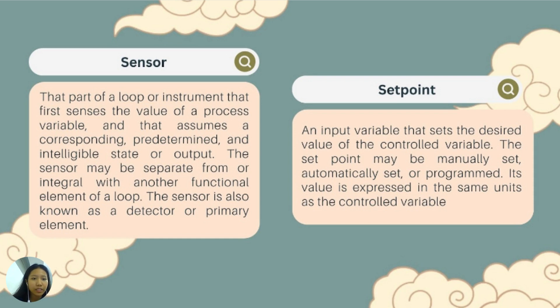Sensor. That part of a loop or instrument that first senses the value of a process. Set point. An input variable that sets the desired value of the controlled variable. The set point may be manually set, automatically set, or programmed. Its value is expressed in the same units as the controlled variable.